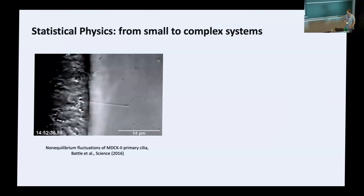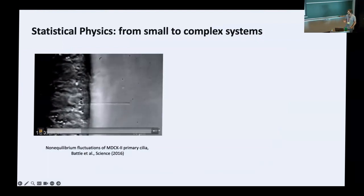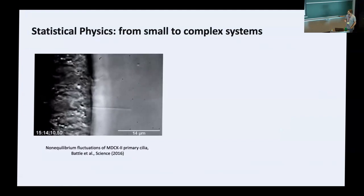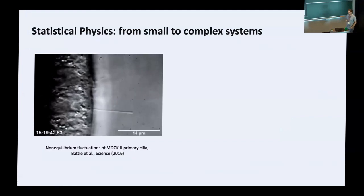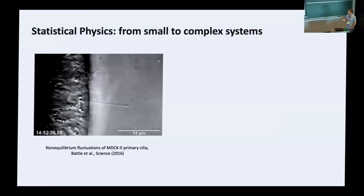For example, small systems: here is a cilia connected to a cell, and you see this motion is stochastic. This is a typical physics problem — we want to understand the fluctuations of this cilia. Interestingly, this motion is not thermal because there are molecular motors inside, so these are non-equilibrium fluctuations. You cannot apply standard thermodynamics to that; we need to develop non-equilibrium thermodynamics.